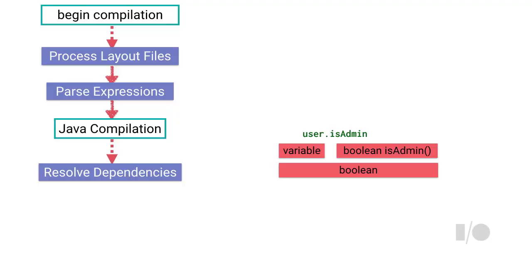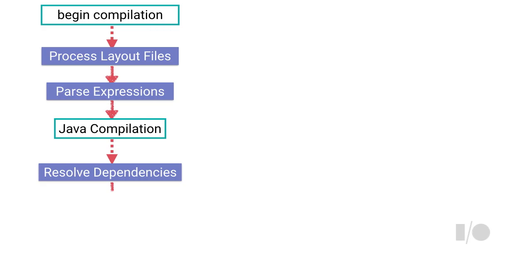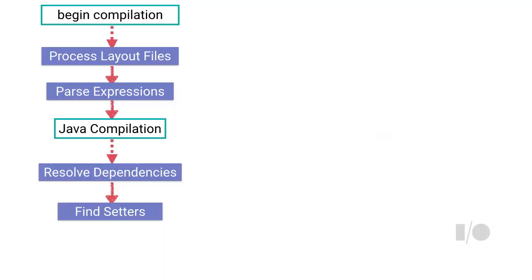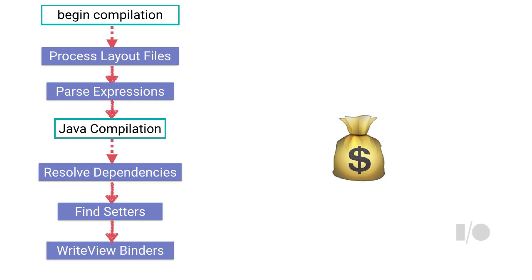Then we look at the attribute and try to find what setter we need to call — like visibility integer, or enabled, whatever. We resolve it, and all of this happens while your application is being compiled. Once we decide what to do, we write the binders — the actual code that updates the UI — and you profit.